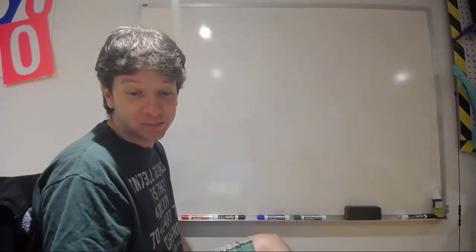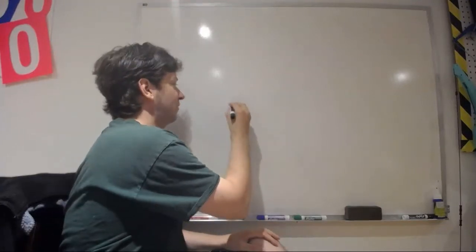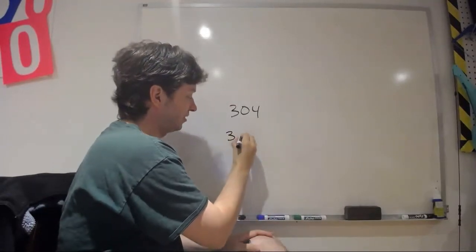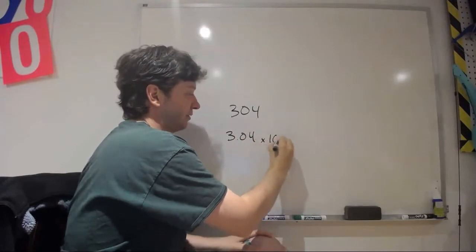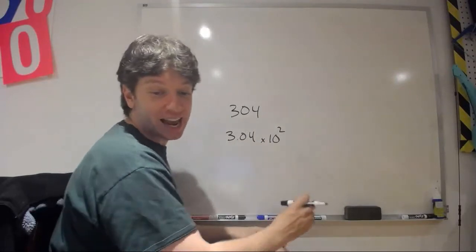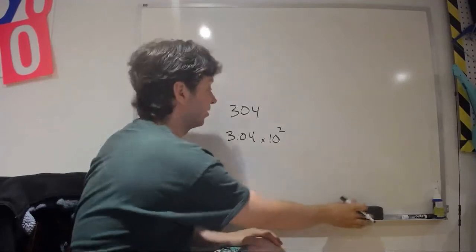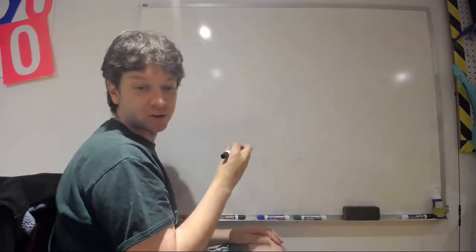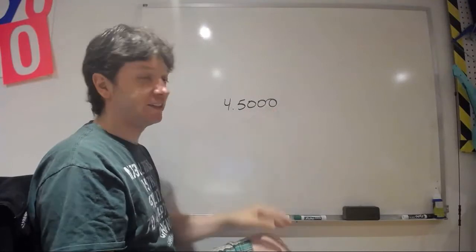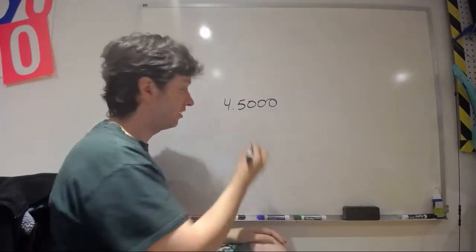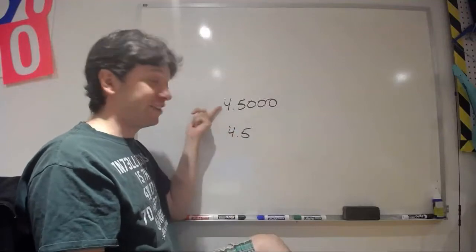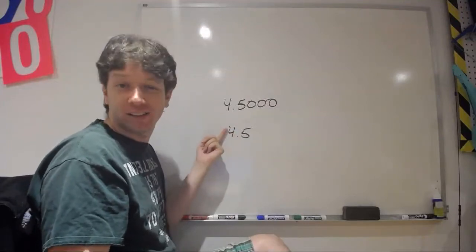Next: zeros placed between non-zero digits are significant. If you have 304, that zero counts. In scientific notation that would be 3.04 × 10², giving you three significant digits. Next: zeros placed after other digits to the right of a decimal are significant. So 4.5000 has five significant digits. Why write all those zeros instead of just 4.5? Because if your measurement is that accurate, why would you say it's not?